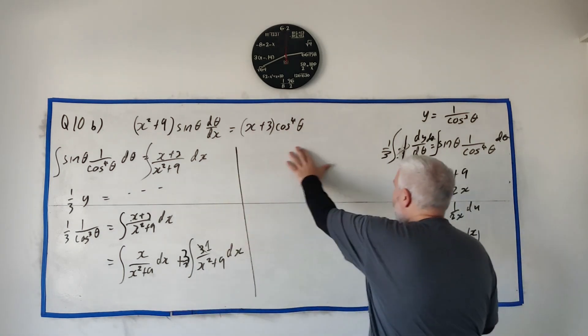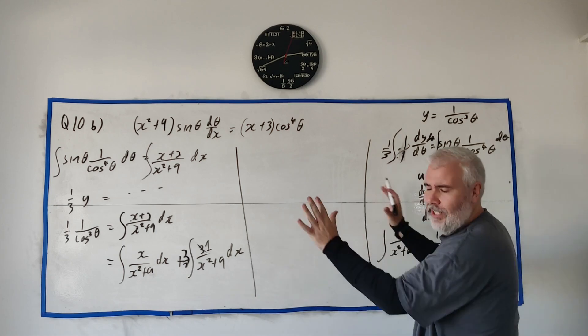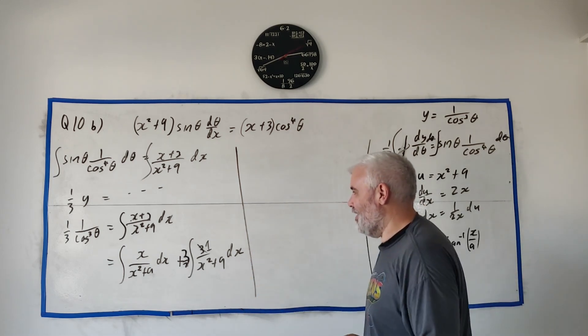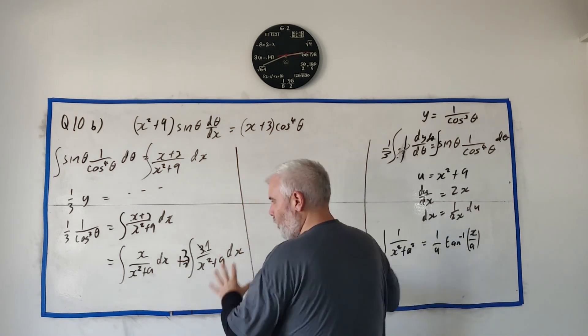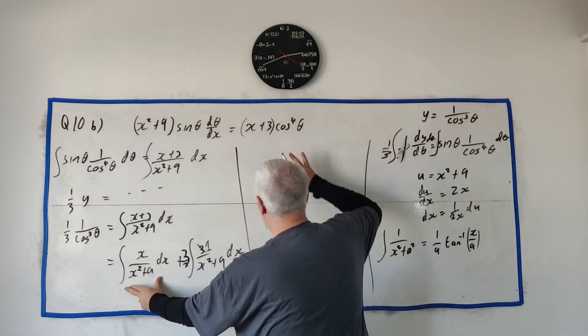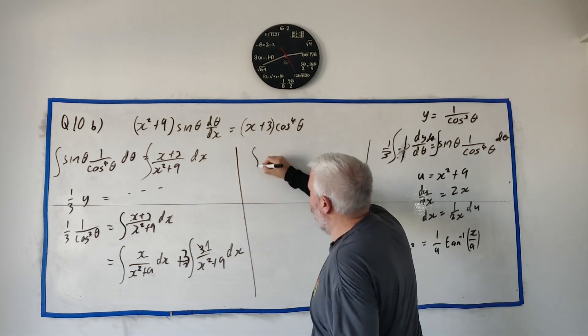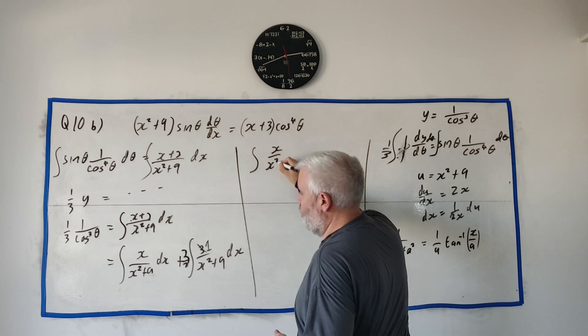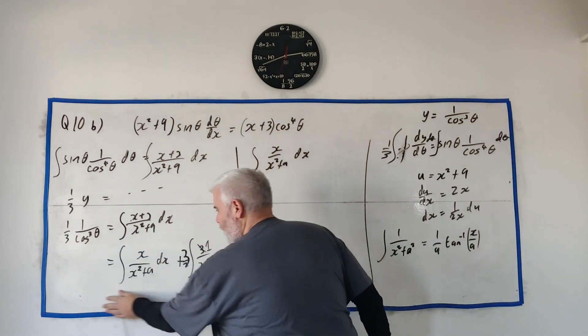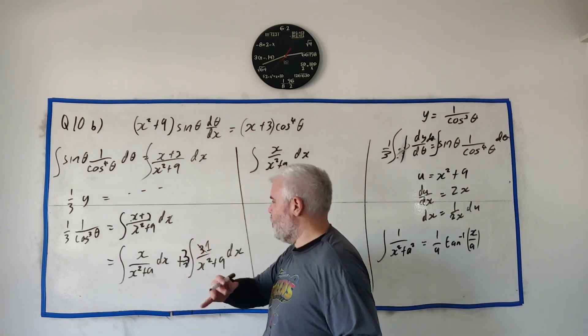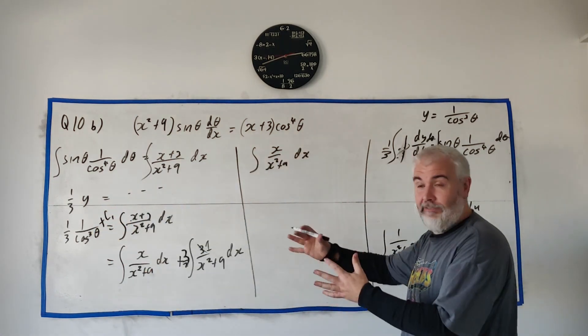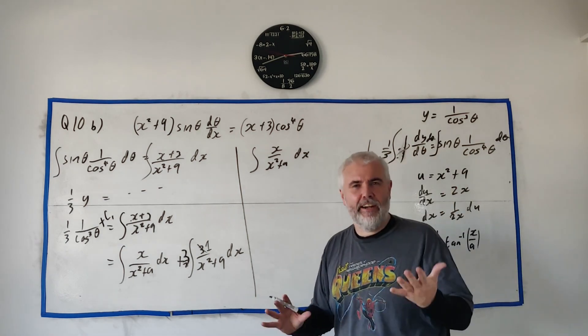Let's take this one part separately so we have room: the integral of x over x squared plus 9 dx. We'll come back to the other part, which can be done in one row. How do we do this? Substitution. I've already done the substitution over here: u equals x squared plus 9, dx equals 1 over 2x du.